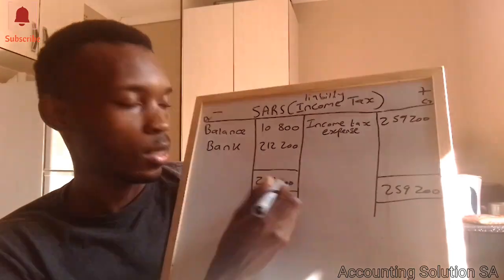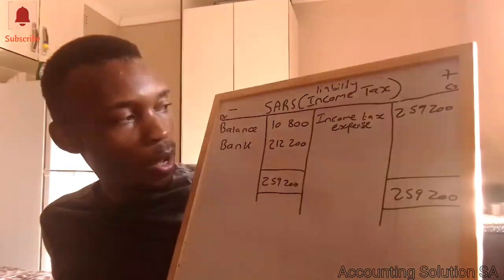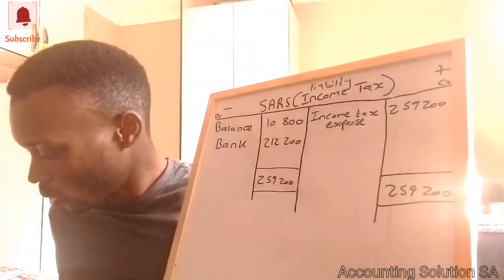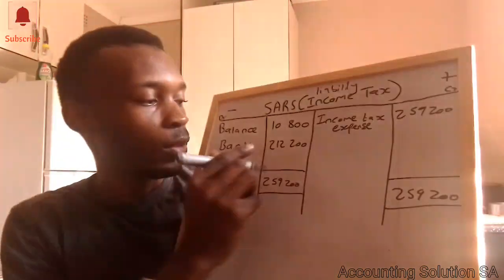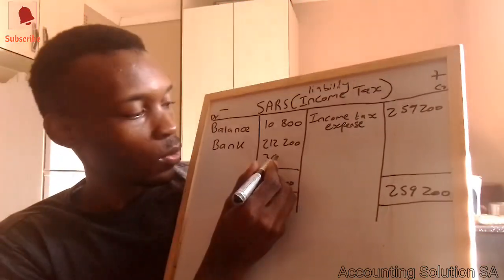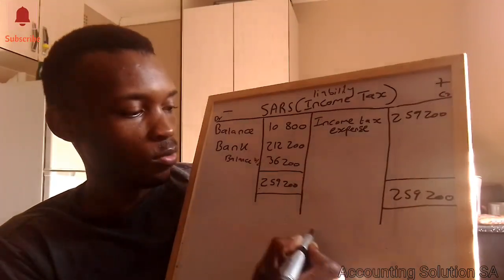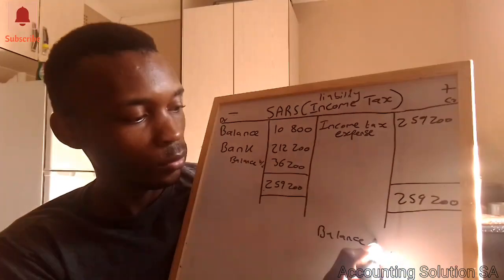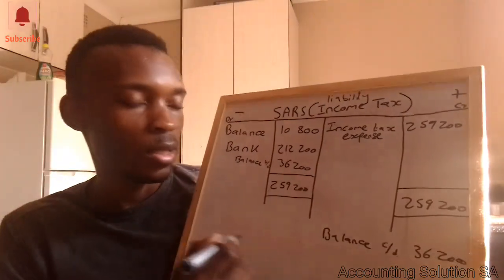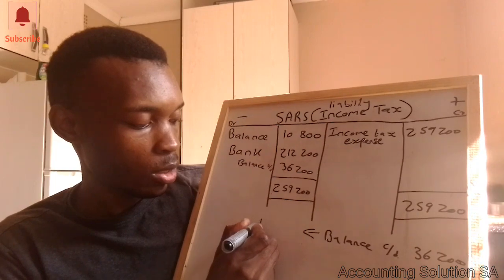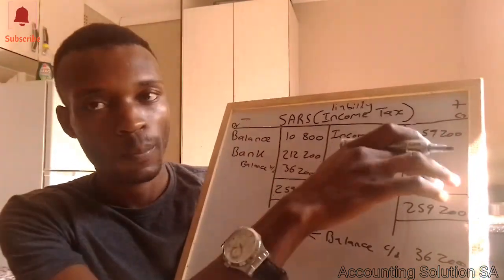Since the credit side is higher at 259,200, we subtract the debit amounts: 259,200 − 10,800 − 212,200 = 36,200. This is the balance carried down. Because the carry-down balance is on the credit side, this means it is a balance due to SARS — we still owe SARS because what we paid is less than what we owe.